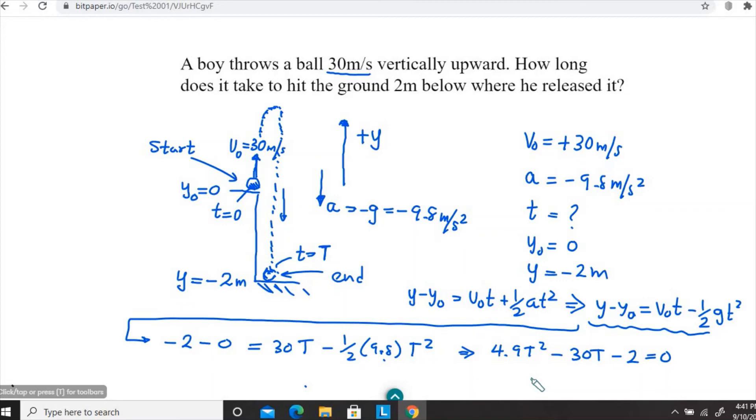This is minus 4.9, I'm going to take it to the other side, so that's 4.9 t squared. Then I'm going to take this 30 to the other side, so that would be minus 30 t, and there's a minus 2 over here. Now we have a quadratic equation in time.